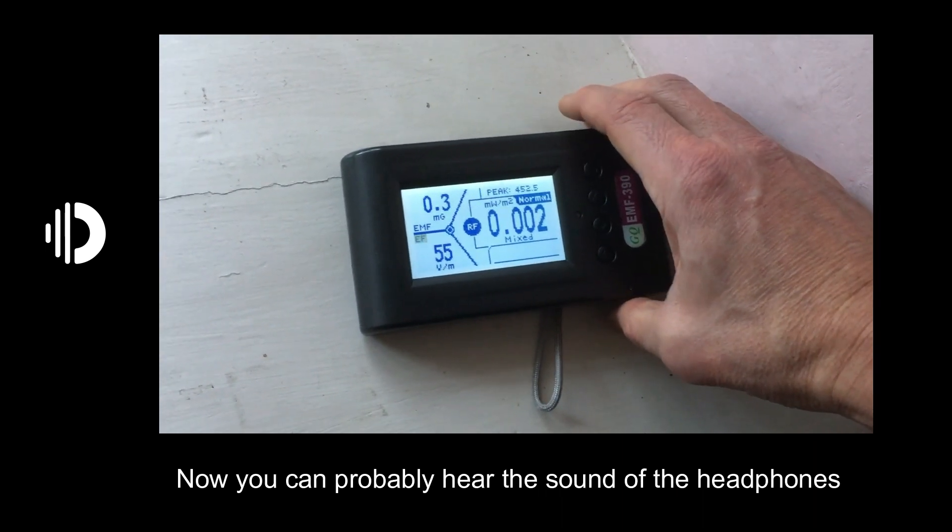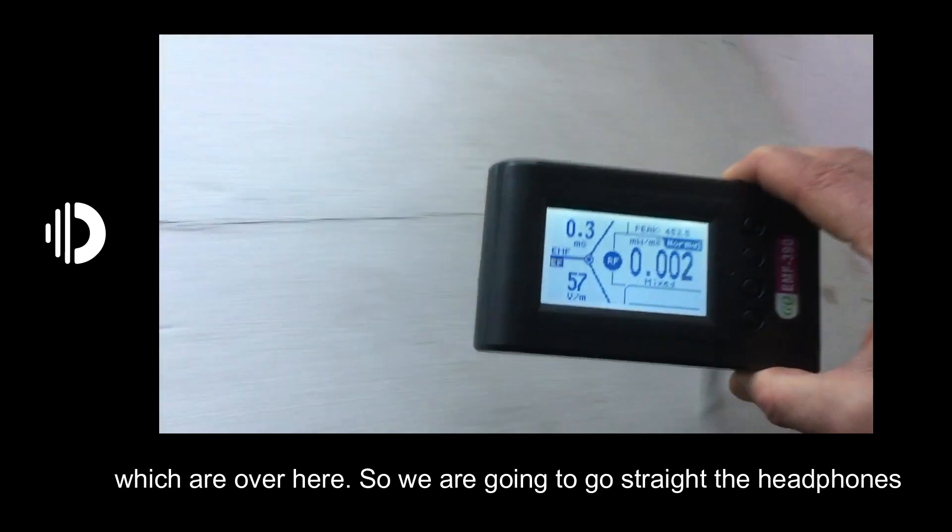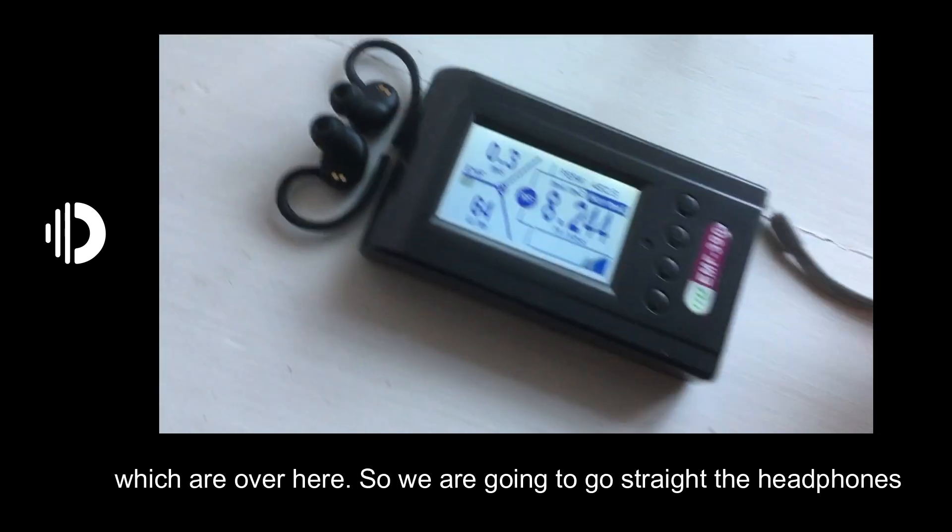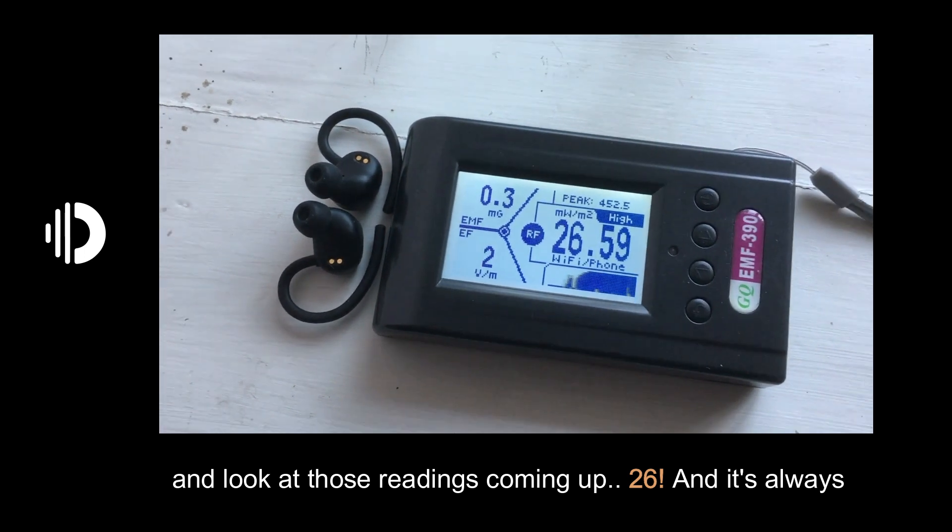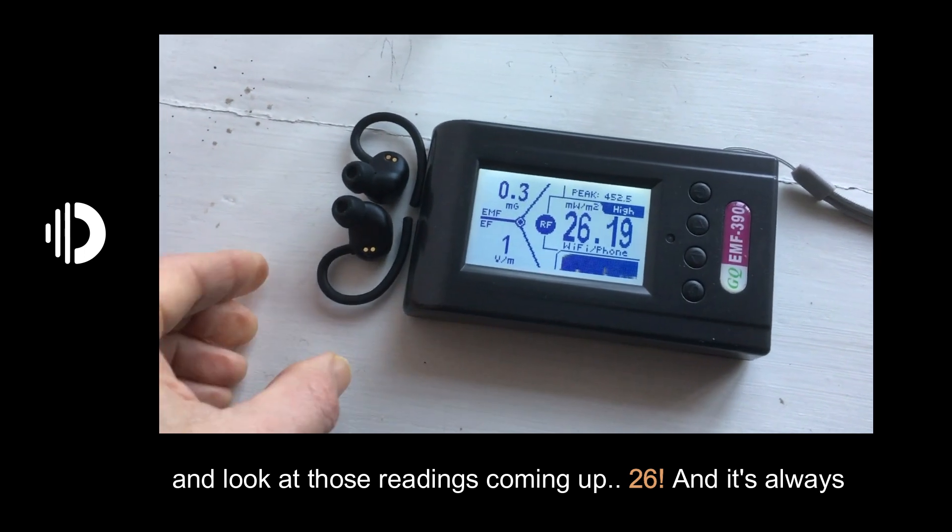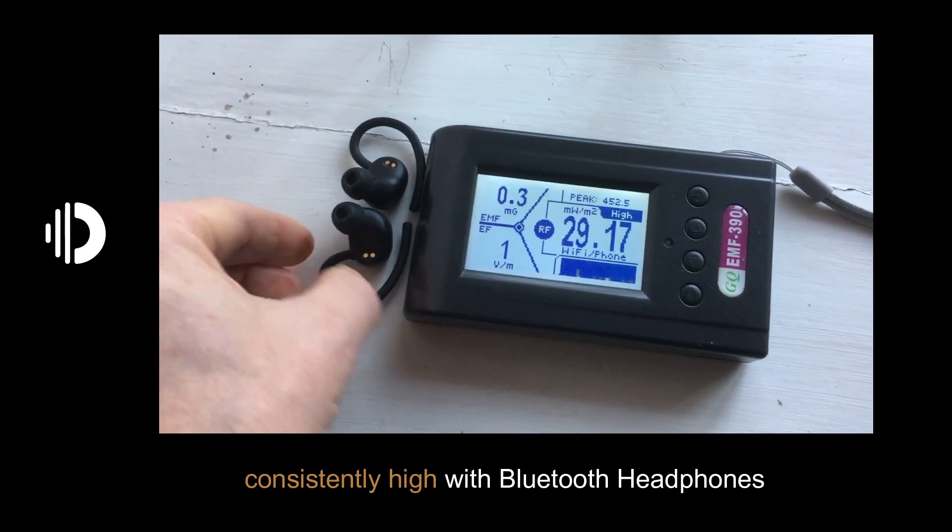Now you can probably hear the sound of the headphones which are over here, so we're going to just go straight to the headphones and look at those readings coming up—26. It's always consistent, consistently high with Bluetooth headphones.